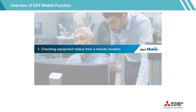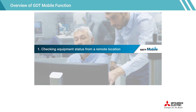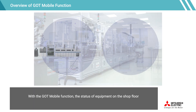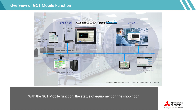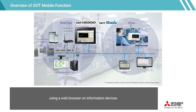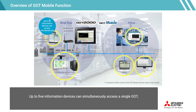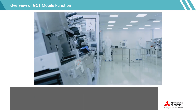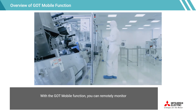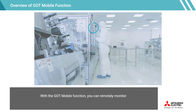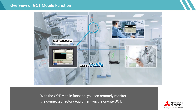With the GOT mobile function, the status of equipment on the shop floor can be checked via the on-site GOT from a remote location using a web browser on information devices. Up to five information devices can simultaneously access a single GOT, allowing for monitoring and operating different screens on each device. You can remotely monitor the connected factory equipment via the on-site GOT.